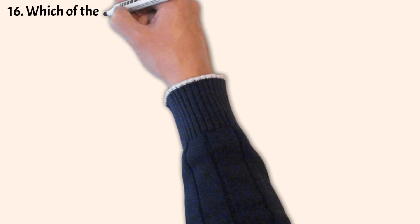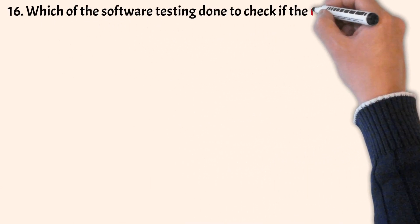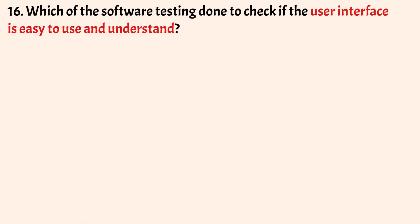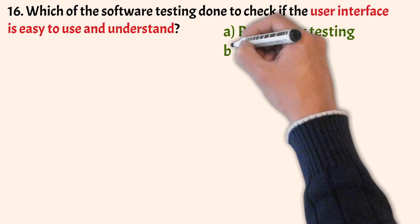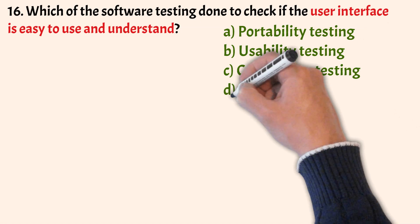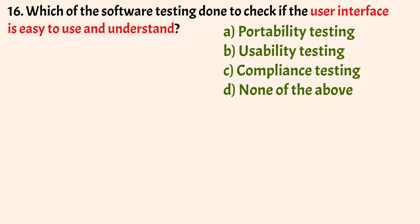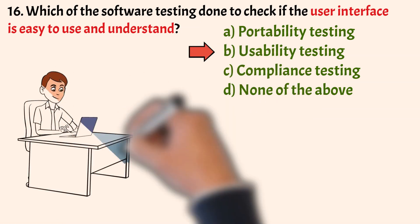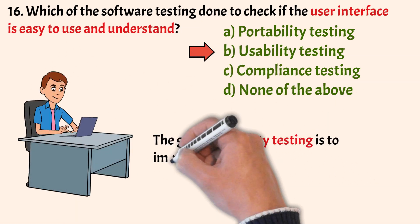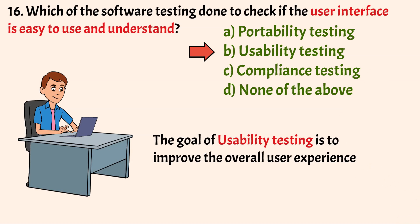Next question: Which software testing is done to check if the user interface is easy to use and understand? Options: Portability Testing, Usability Testing, Compliance Testing, and None of the above. The correct answer is Option B, Usability Testing. The goal of Usability Testing is to improve the overall user experience.